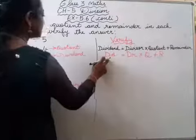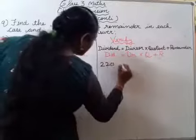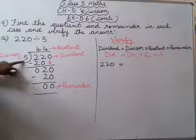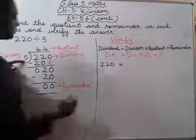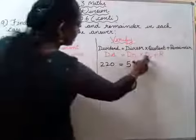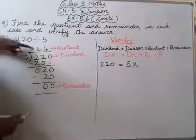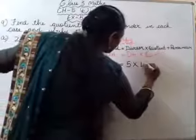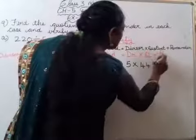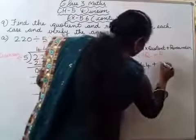So ismein aapko kya karna hai — jo numbers hai woh aapko apply karna hai. So dividend kya hai? Dividend is 220. Us jagah pe aapko likhna hai. 220 is equal to divisor kya hai — divisor is 5. Then put the multiplication sign. What is the next number? We have to write quotient. Quotient 44 hai. Next, put the addition sign. Plus R — R is remainder. Reminder is 0. So write 0 as it is.